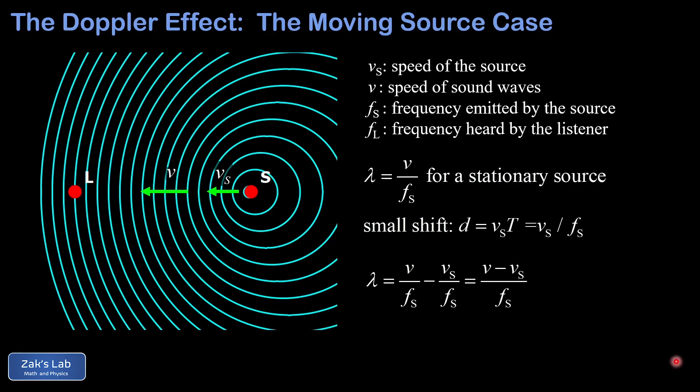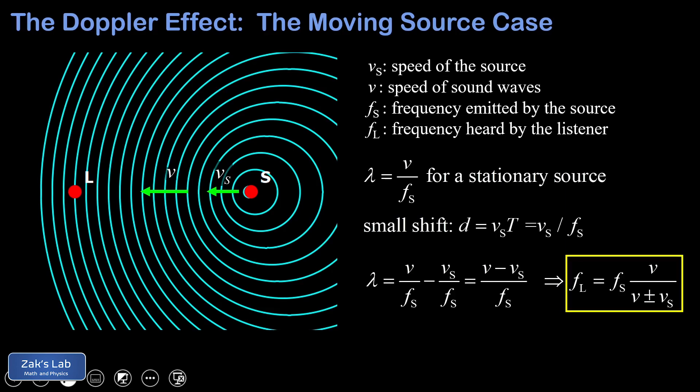So what sound does the listener hear with this compressed wavelength? The frequency heard is the speed of sound divided by the wavelength of that sound. So FL equals FS times V divided by (V minus VS). Again, we would get a plus if the source were moving away instead of toward us, so we generalize the formula with a plus or minus. We choose minus when the source is headed toward us — that makes the denominator smaller, giving a higher frequency — and plus when the source is moving away, making the denominator larger and giving a lower frequency.